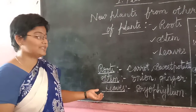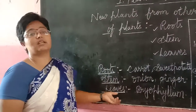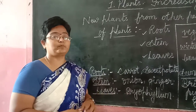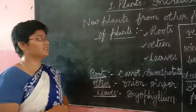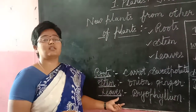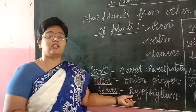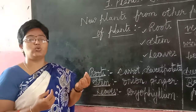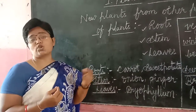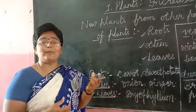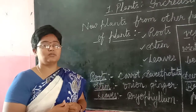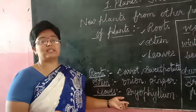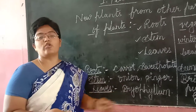Now let us see the example which forms a new plant from leaves — it is nothing but Bryophyllum. You might have observed in your surroundings this plant, which has long leaves that produce new buds or twigs on the edges, which come out as new plants. So the great example which provides new plants from its leaves is Bryophyllum.